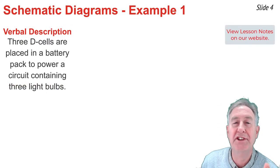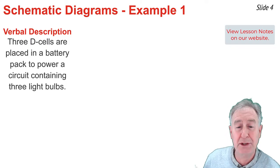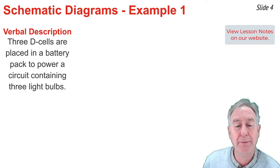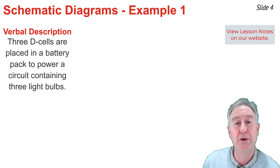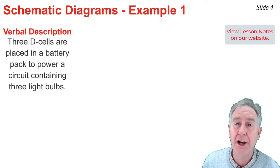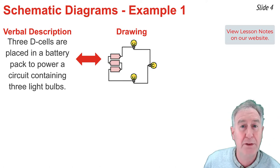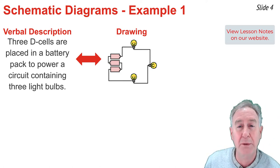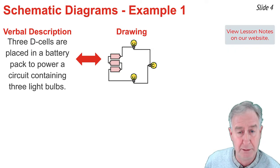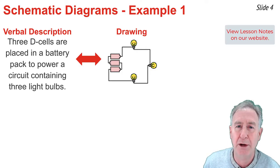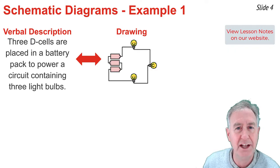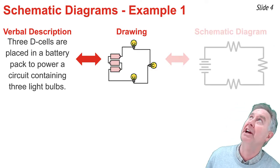Let's discuss how to create a schematic diagram from a verbal description such as this one: three D cells are placed in a battery pack to power a circuit containing three light bulbs. A good starting point is to draw a drawing showing a collection of three cells in a battery pack and three light bulbs connected by wires. To draw the schematic diagram, I need a battery symbol — a collection of long and short lines — resistors to represent the light bulbs, which are zigzag lines, and connecting wires.